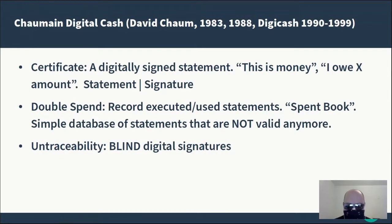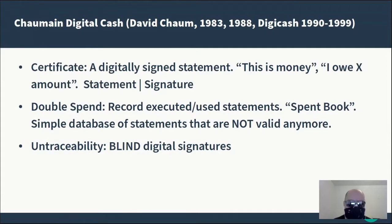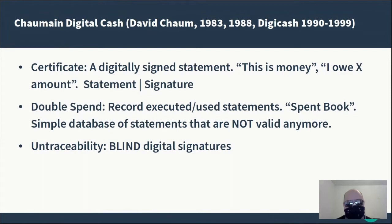The signature authenticates the statement. So if bank A says 'I owe bank B this much money,' it signs the statement and that becomes a certificate. The problem is that digital values can be copied, so you have to solve the double-spend issue. You record all certificates whose statements have been executed — the so-called spend book. And by applying interesting cryptography — blind digital signatures — you can make those certificates untraceable, meaning the bank cannot say whom they issued a certificate to or which certificate was used by what person.